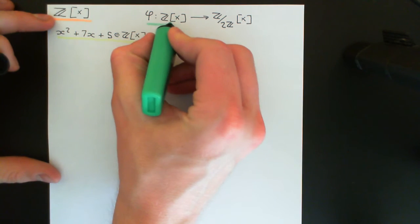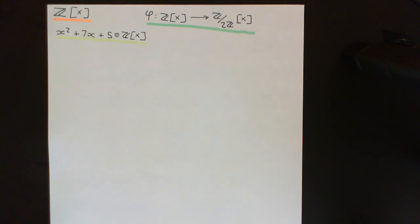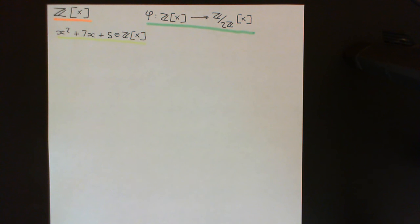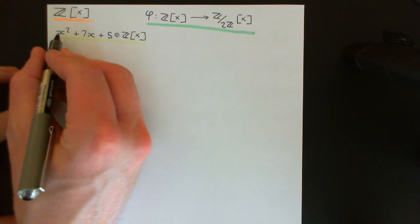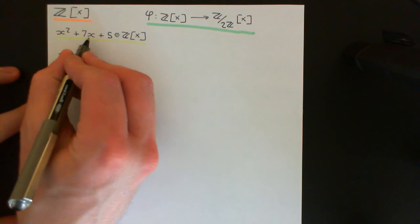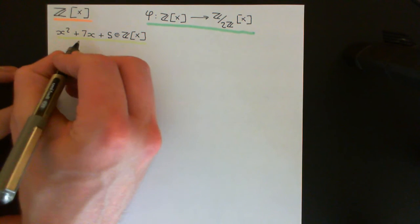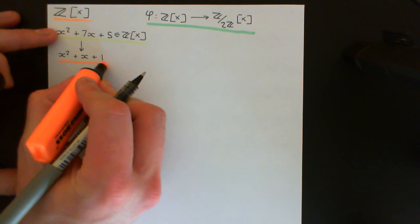What we do is send every polynomial with coefficients in the integers to the polynomial in (ℤ/2ℤ)[x] where, for each coefficient in the original polynomial, we ask what that coefficient is modulo 2. Modulo 2 there are only two elements, 0 and 1: all even integers fall in the coset of 0, and all odd integers in the coset of 1. So 1 maps to 1 (keeping x²), 7 maps to 1 (odd), and 5 also maps to 1 — giving us x² + x + 1 in (ℤ/2ℤ)[x].